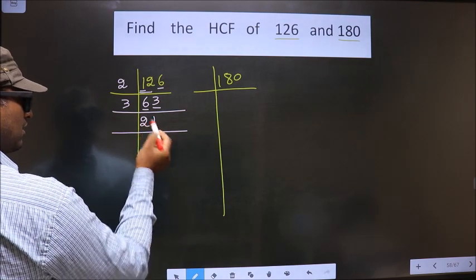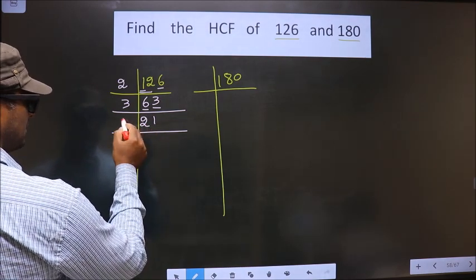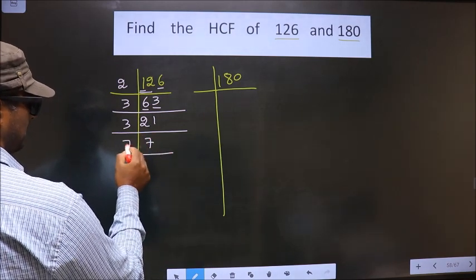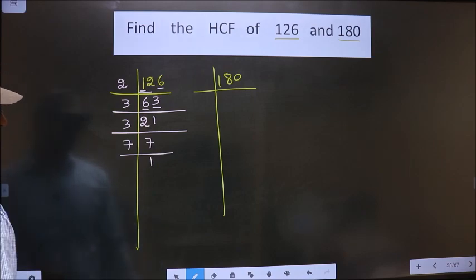Now, here we got 21. 21 is nothing but 3 times 7. Now, 7 is a prime number. So we take 7 and 1.